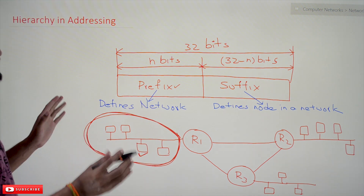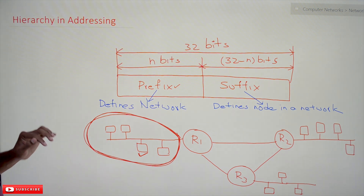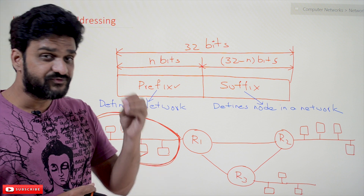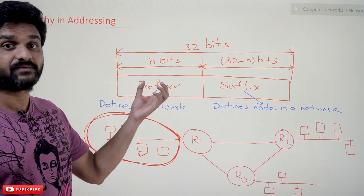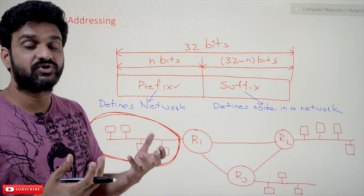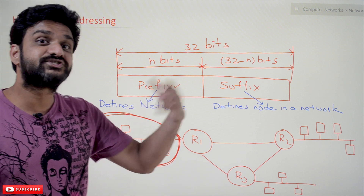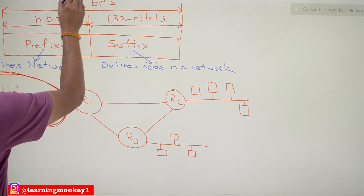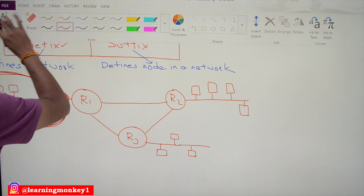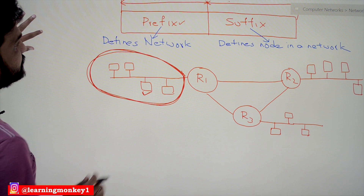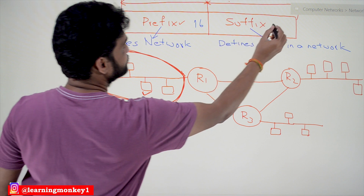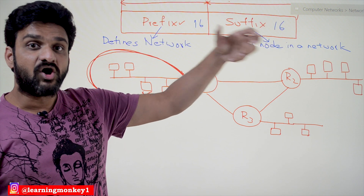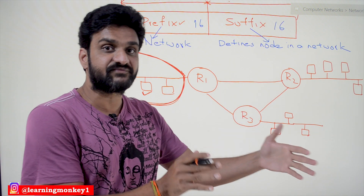Let's try to understand this by dividing the entire IP address into two parts — one is 16 bits and the other is 16 bits. This approach is what we call a fixed-length prefix. If we consider a fixed-length prefix for all IP addresses, the entire 2-to-the-power-32 IP addresses are divided such that the prefix is 16 bits and the suffix is also 16 bits. Let's look at the advantages and disadvantages of this fixed-length prefix approach.